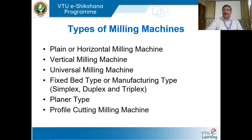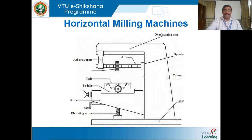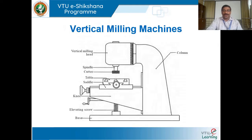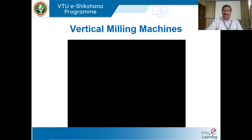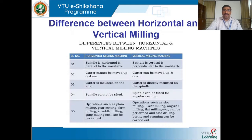We had seen different types of milling machines: the planar horizontal milling machine, vertical milling machine, universal milling machine, special type milling machine, and profile cutting milling machine. As far as your syllabus is concerned, we have only two — horizontal and vertical milling machine. I explained the entire functionality, working principle, and you witnessed videos of both. Then we saw the differences between vertical and horizontal milling machines.